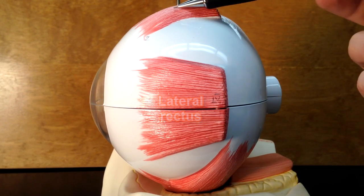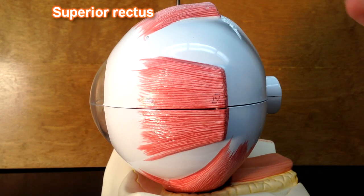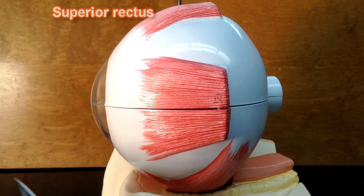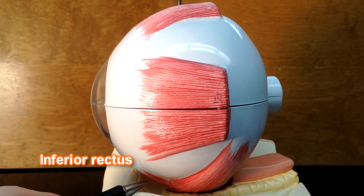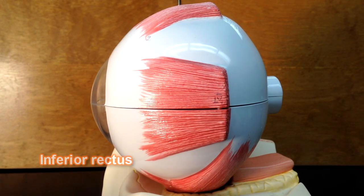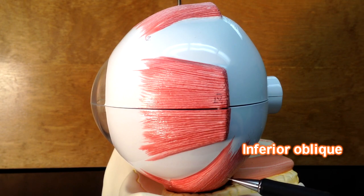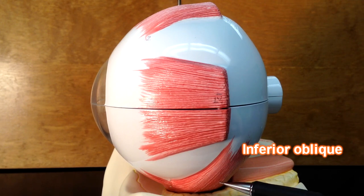This muscle up here is going to be superior rectus. And then there's going to be an inferior rectus muscle underneath here. And then over top of inferior rectus there's going to be this inferior oblique muscle right there.